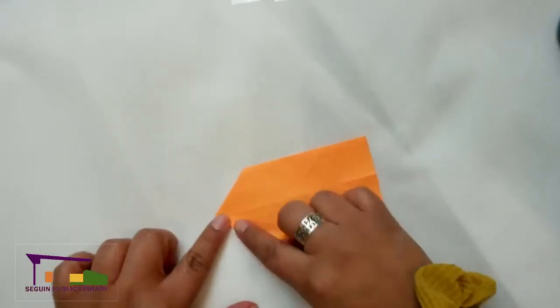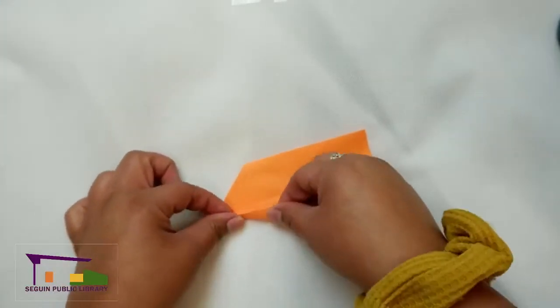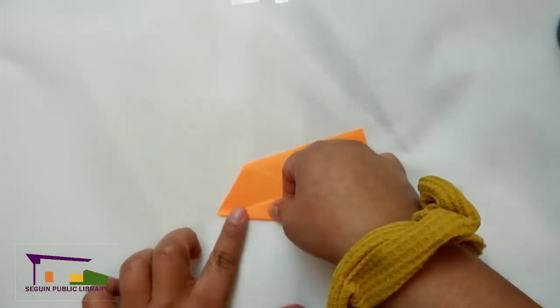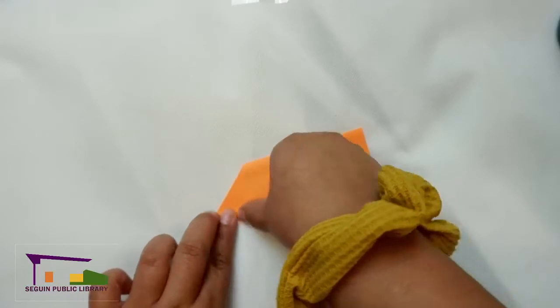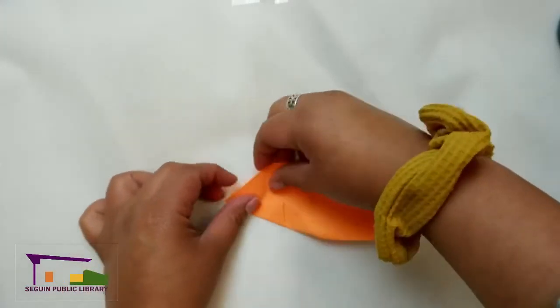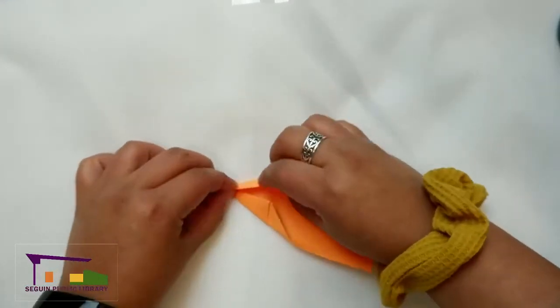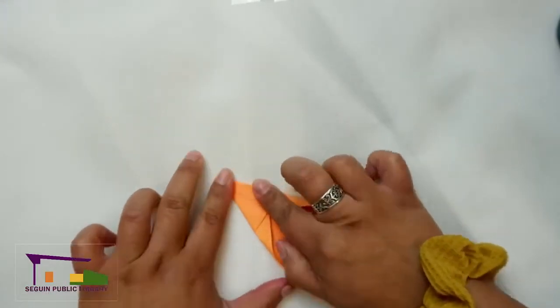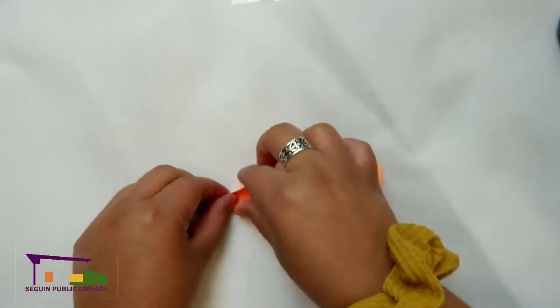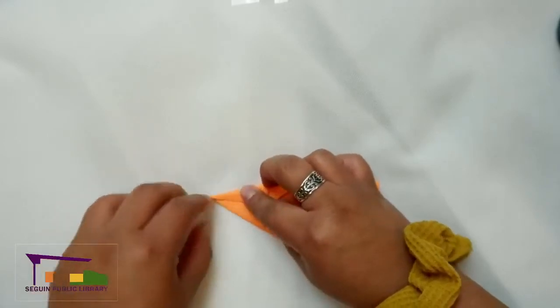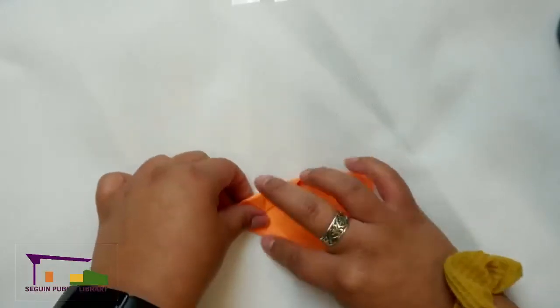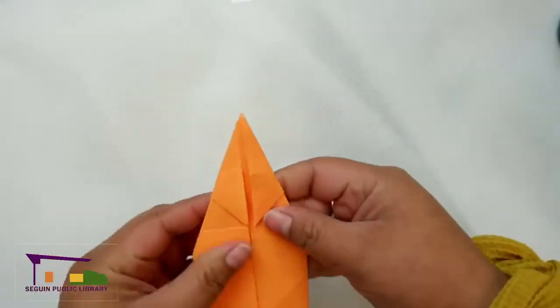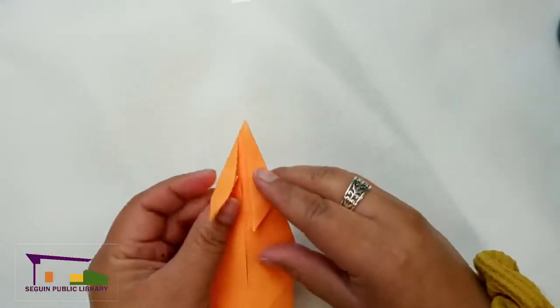So we're going to take these edges in and make them meet that central line. This will give our fox his narrow snout. And we'll do the same on the other side, bringing that edge in. And make sure it meets up in the middle. And if you flip it over you'll see we've still got the ears there.